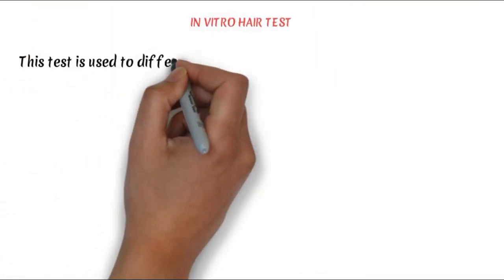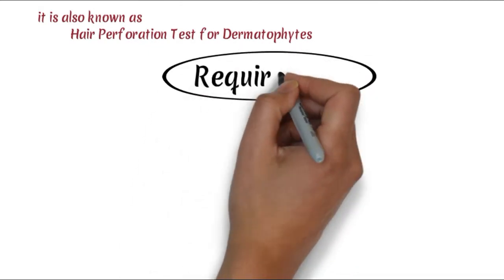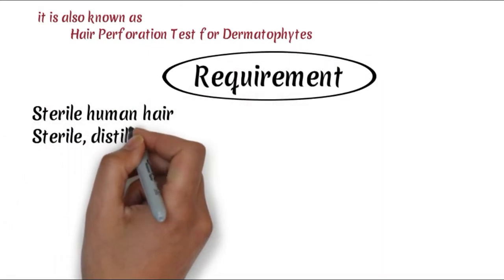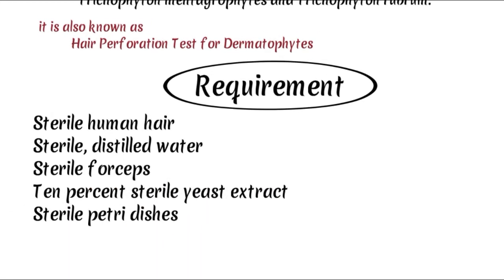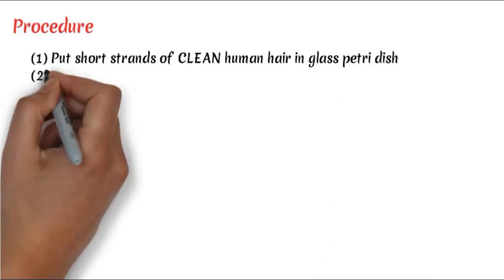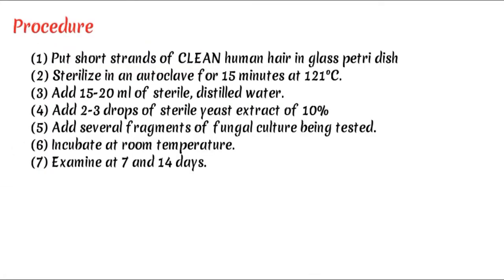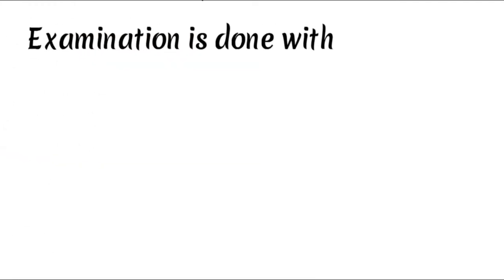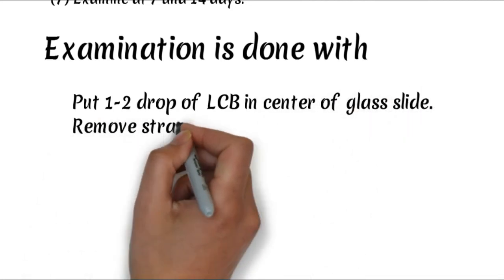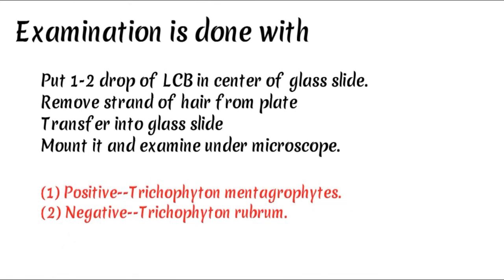The hair perforation test (in vitro hair test) is used to differentiate Trichophyton mentagrophytes from Trichophyton rubrum. Requirements include: sterile human hair, sterile distilled water, sterile forceps, 10% sterile yeast extract solution, and sterile Petri dishes. Procedure: Place short strands of clean human hair in a glass Petri dish and sterilize by autoclave at 121°C for 15 minutes. Add 15 to 20 ml of sterile distilled water and 2 to 3 drops of 10% sterile yeast extract along with fragments of fungal culture. Incubate at room temperature and examine up to 7 to 14 days. Place 1 to 2 drops of LCB in the center of a glass slide, remove a strand of hair from the plate, transfer to the slide, mount, and examine under microscope. The positive result is Trichophyton mentagrophytes and the negative result is Trichophyton rubrum.